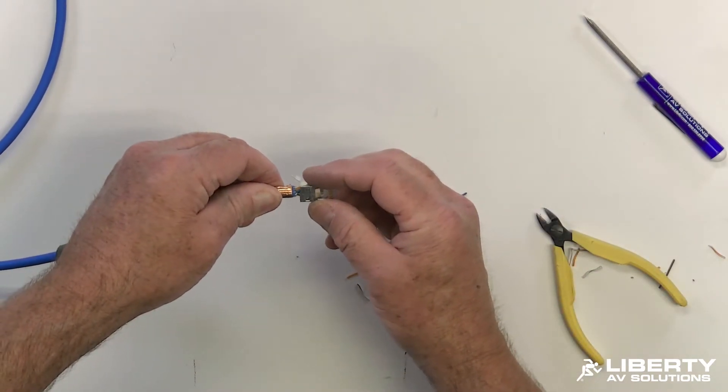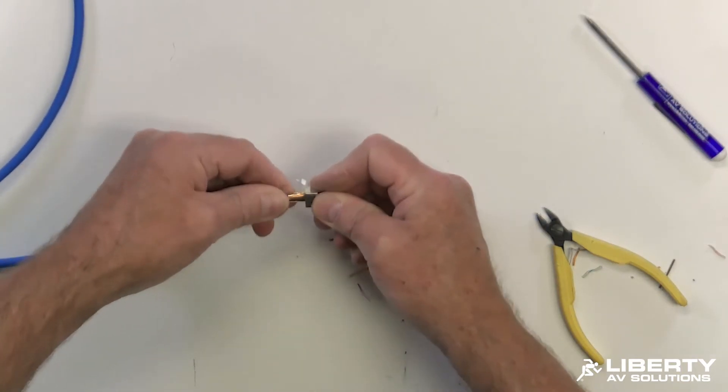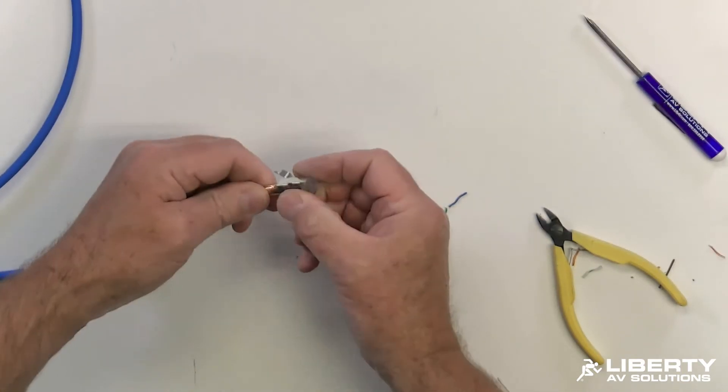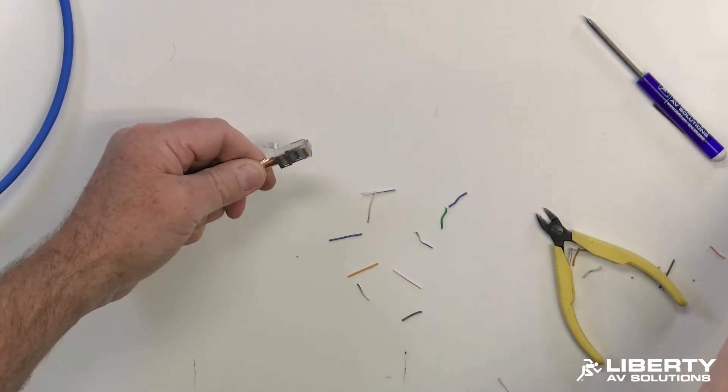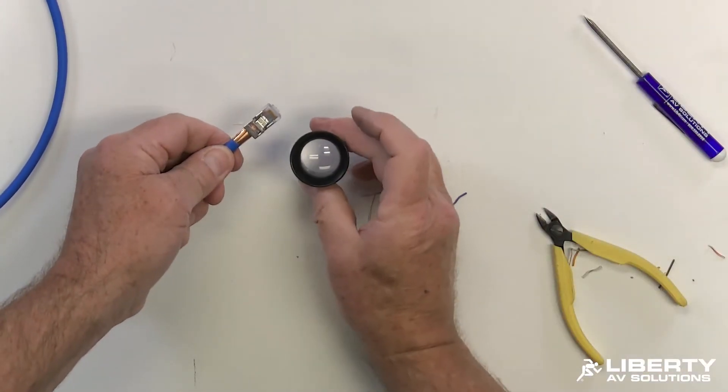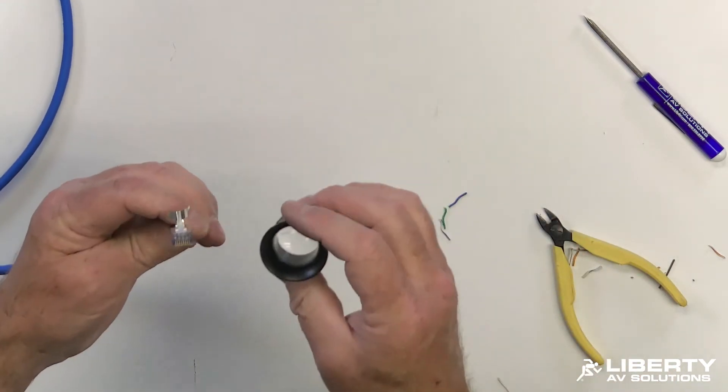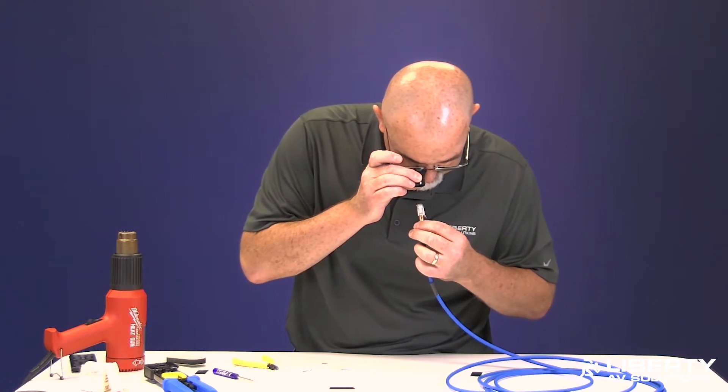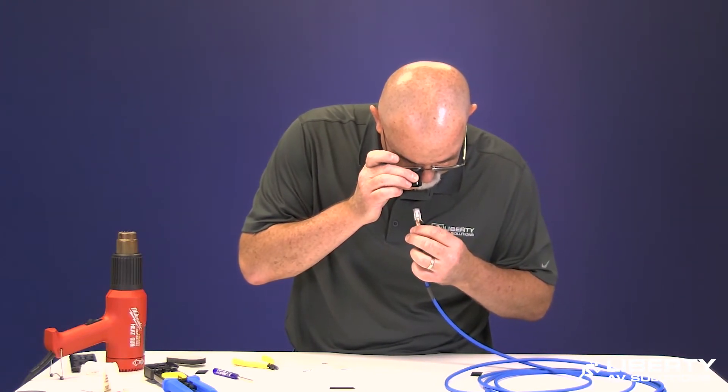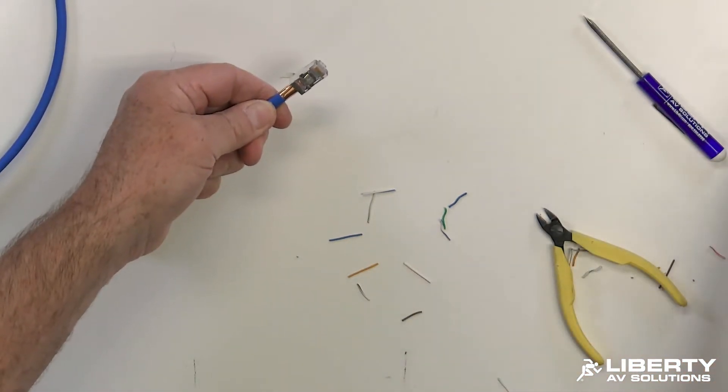Once you get those in there, you can go ahead and slide this up in. Just kind of shove it in there nice and firmly. Kind of rock it a little bit. Make sure it's seated firmly. And this is where a tool such as a jeweler's loupe like this or a magnifying glass gives you an advantage. You want to look at the front of the connector to make sure you can see copper in all the slots. So I see copper in all the slots. And I also see my conductors are in the right color code order. So everything's ready there for crimping.